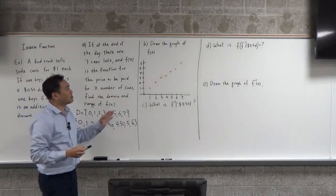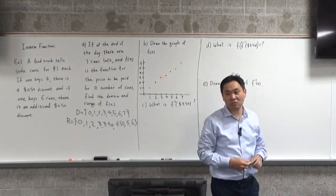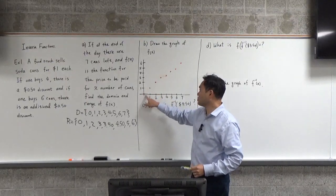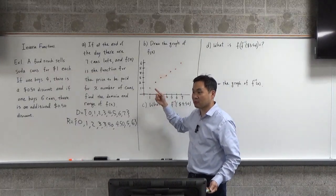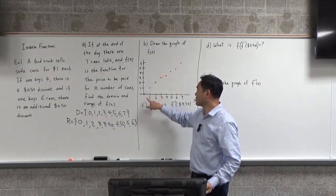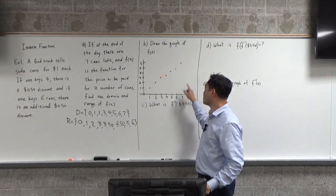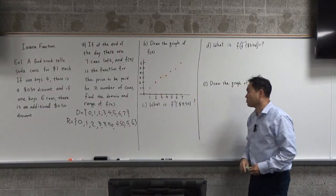It's tempting to connect these by curves, but you shouldn't because that would mean you're allowing numbers in between to be plugged in. But that's not what you have - only discrete numbers: 0, 1, 2, 3, 4, 5, 6, 7, with discrete possible values. So that's the function.